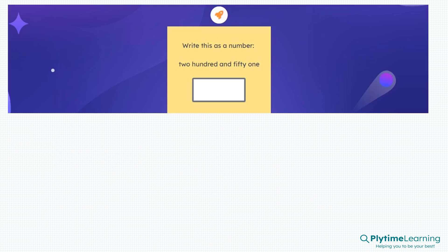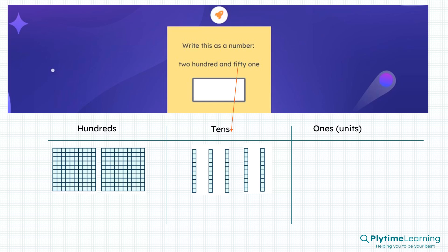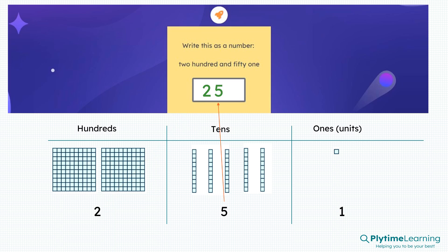Write this as a number: two hundred and fifty-one. If we had our columns, we can see it's 2 in the hundreds column, 50 or 5 in the tens column, and 1 in the ones column. So we write 251 as 2, 5, 1.